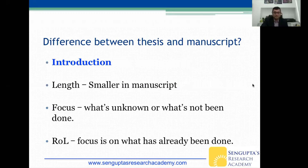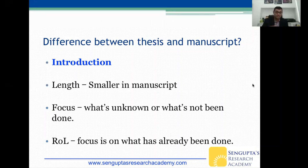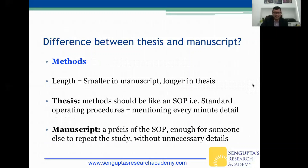First, the introduction: the length is much smaller for a manuscript, and the focus is on what's known and what hasn't been done — basically you focus on what we don't know. In a thesis review of literature, your focus is on what is already known, so it is much larger. When writing a manuscript for a journal, you need to focus on the gap in the literature — what has not been done.